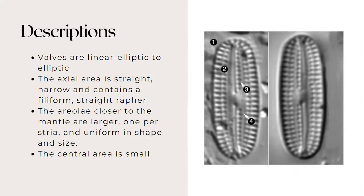The areolae are closer to the mantle and are larger. One per stria and uniform in shape and size. The central area is small.